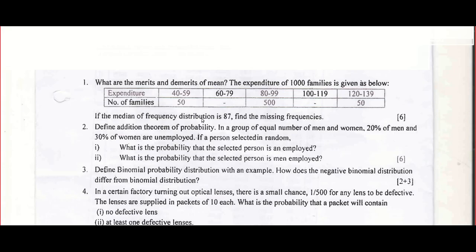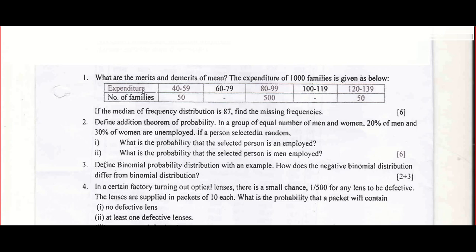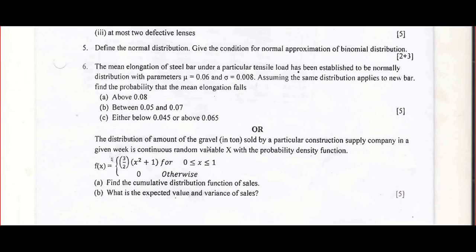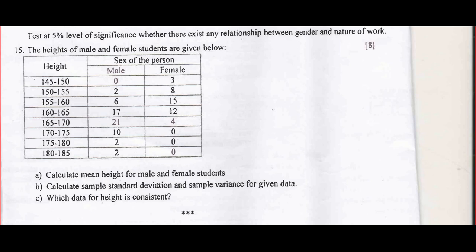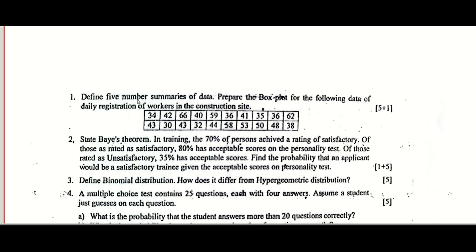Now, I will show you another question — you can see it is something related to mean, median, etc., asking some basic questions you might have learned long back. Again, the second problem is related to something very basic from the tree diagram or conditional probability. And I want to focus on the last question: question number 15, normally for eight marks, asking mean, standard deviation, consistency, etc. You can also see the five-number summary, which is a box plot.